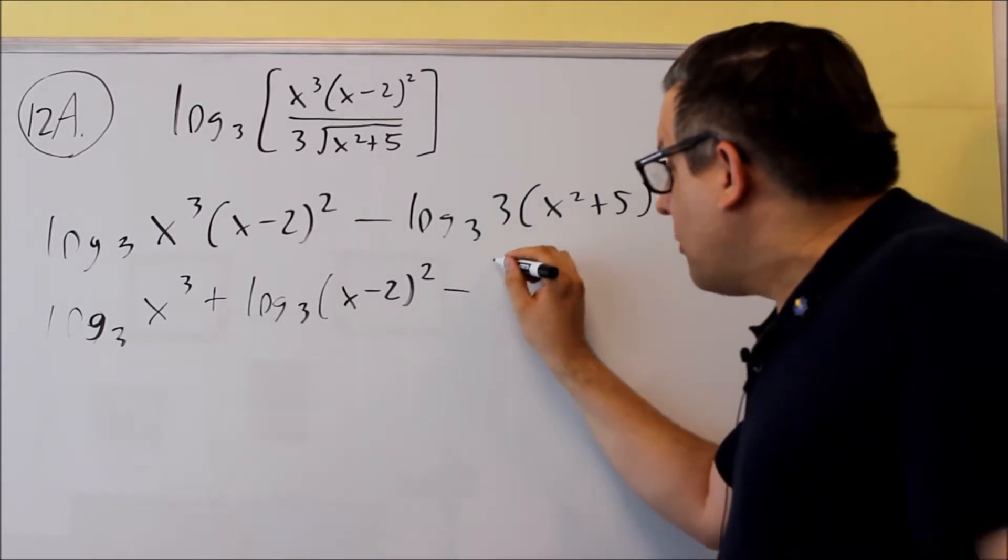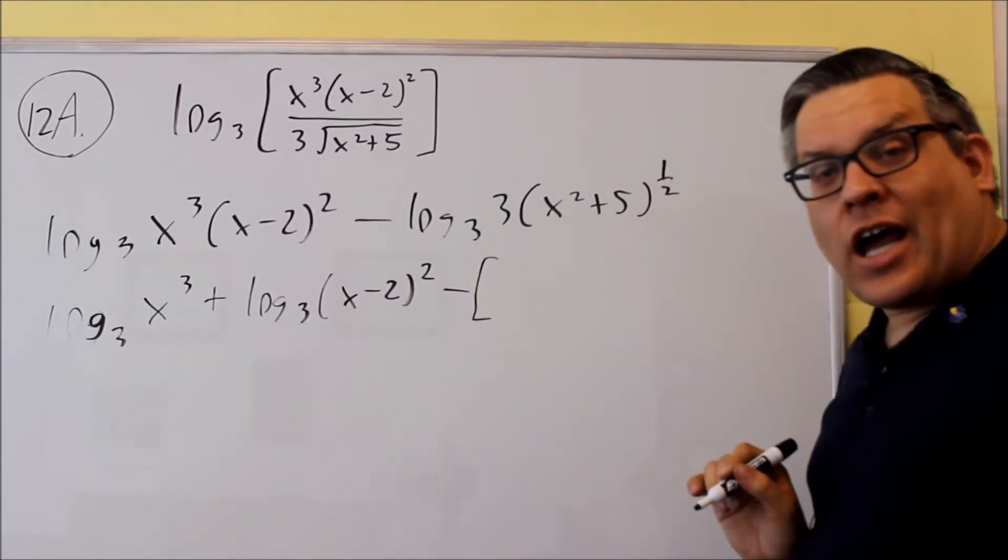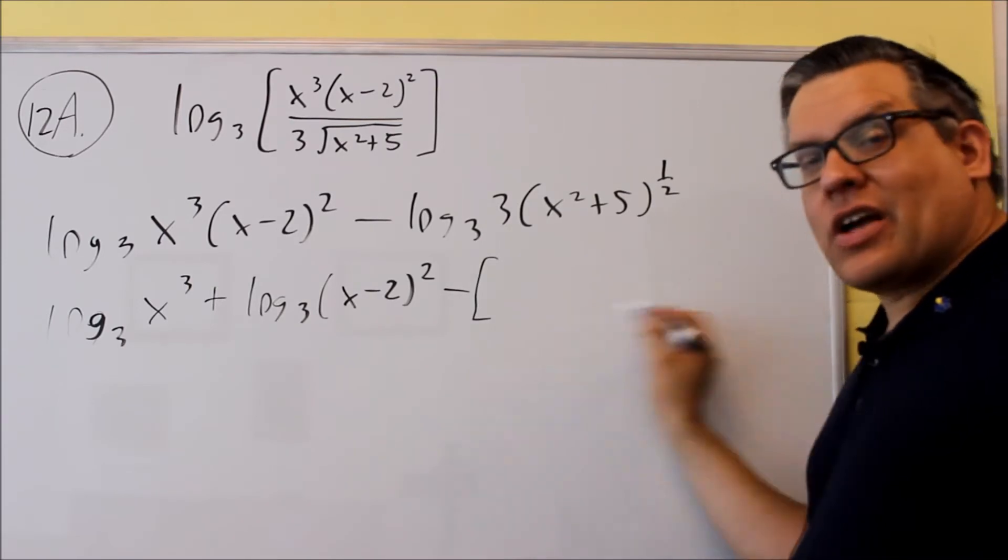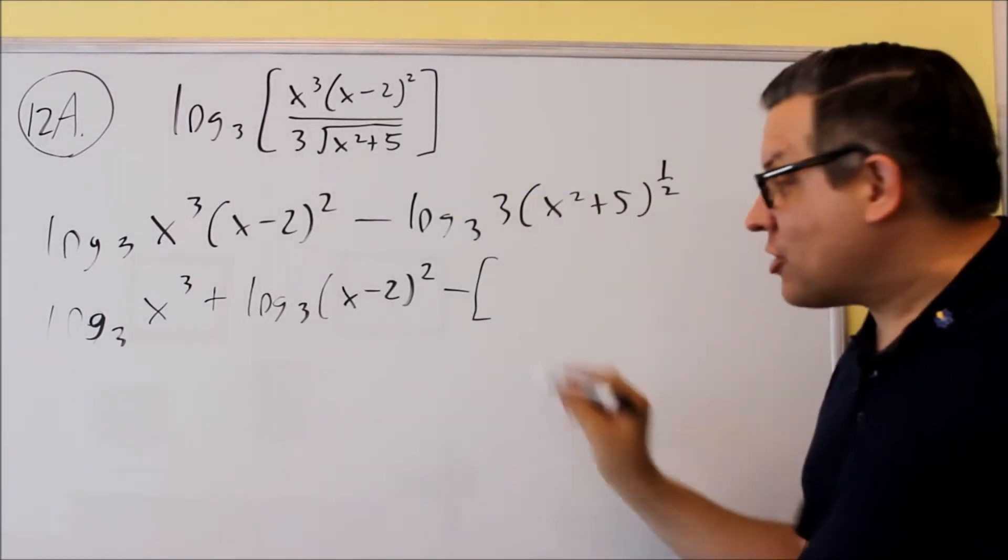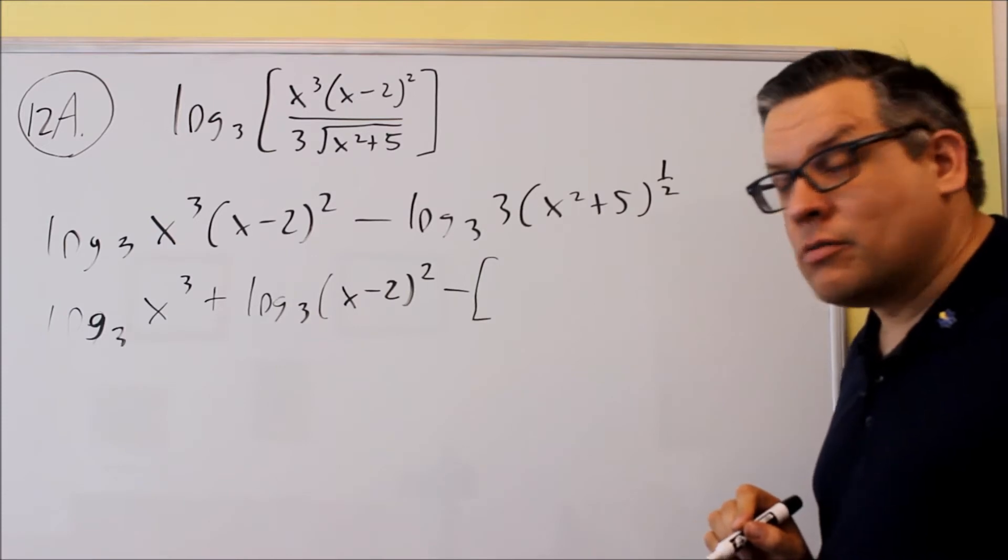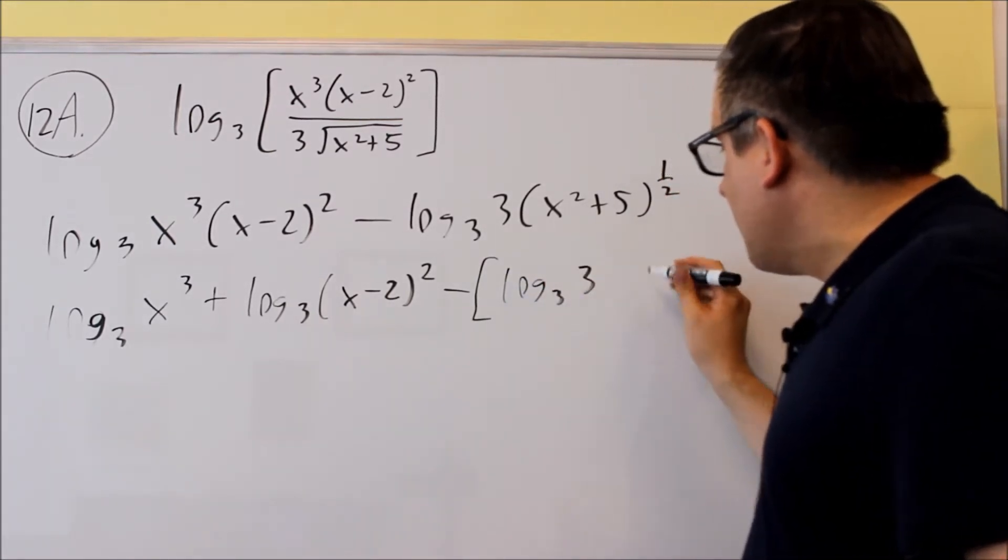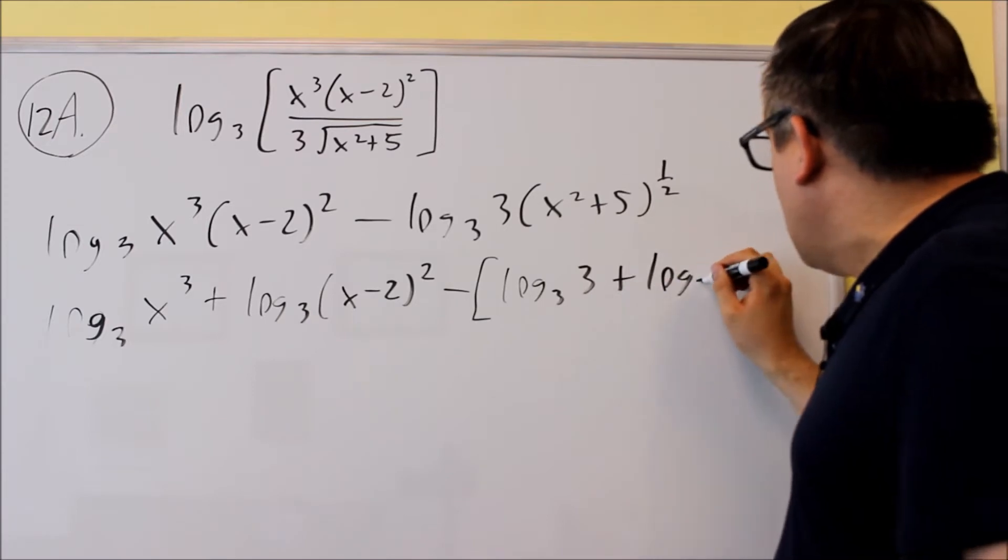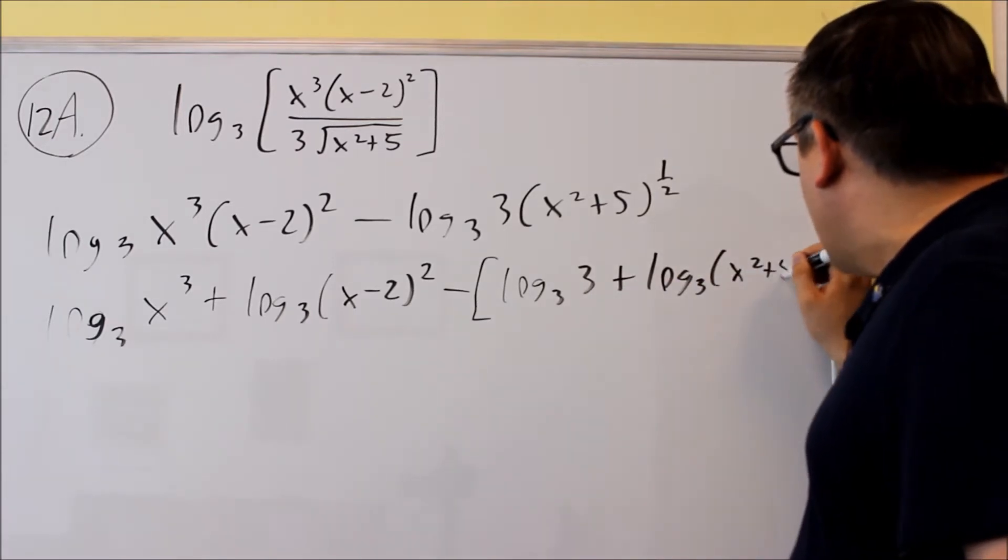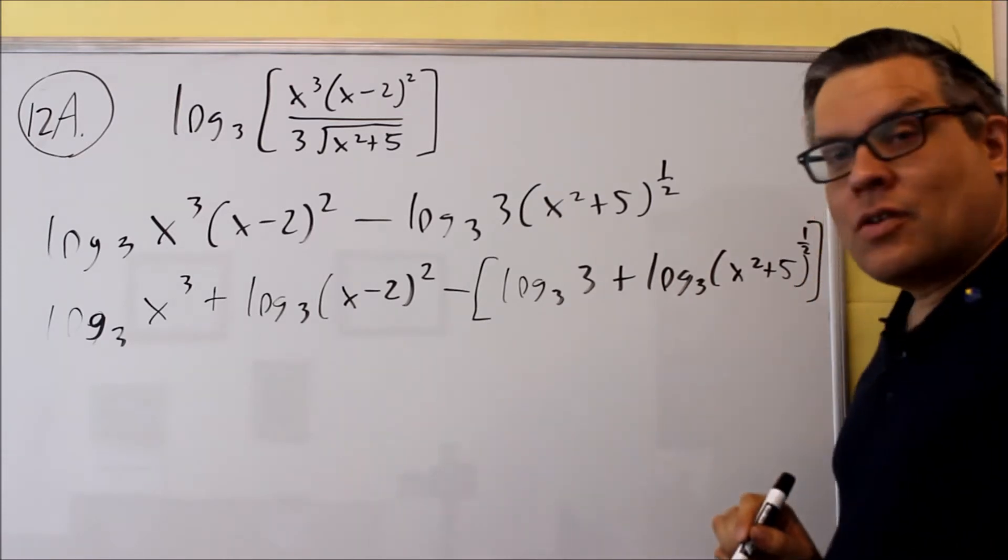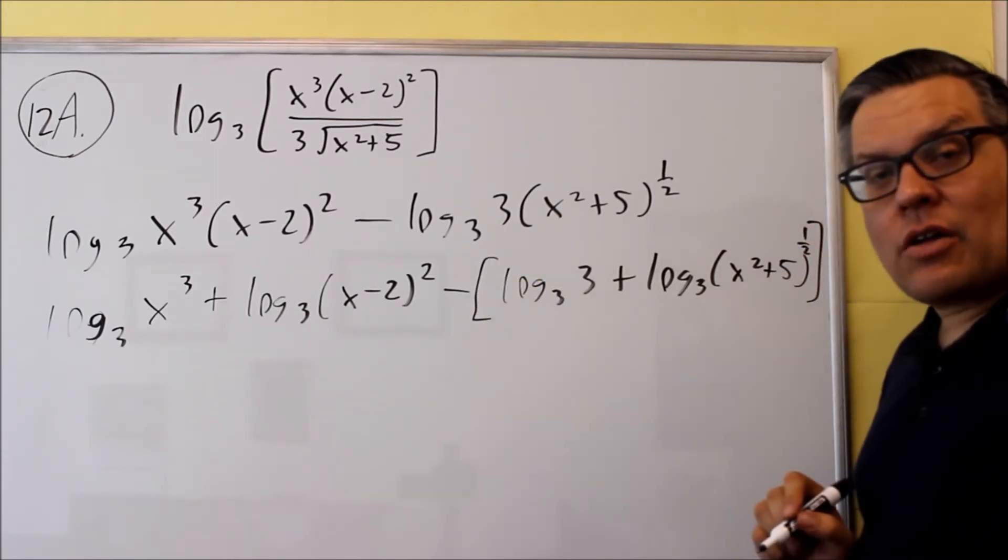Now the minus sign, I want to make sure I put this inside some brackets to denote that anything I have that comes next, the original was in the bottom of my fraction, so it has to have a negative sign in front of it. I get log 3, 3 plus log 3 of x squared plus 5 to the 1 half power. So again, the negative has to be on the outside.